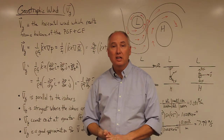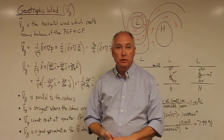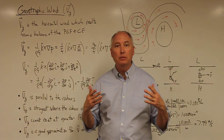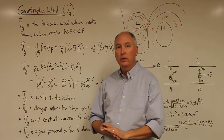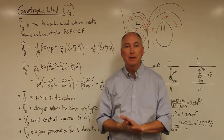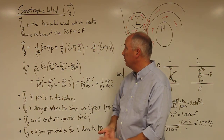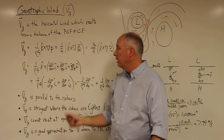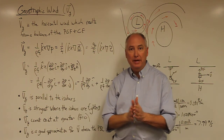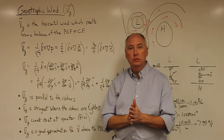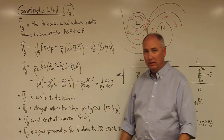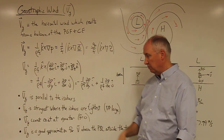Today we're going to introduce the concept of the geostrophic wind. The geostrophic wind is the wind that would result if the pressure gradient force and the Coriolis force were balanced. The geostrophic wind is denoted as Vg. Vg is going to be parallel to the isobars, and it's going to be strongest where the isobars are tightest — where we have the strongest pressure gradient.